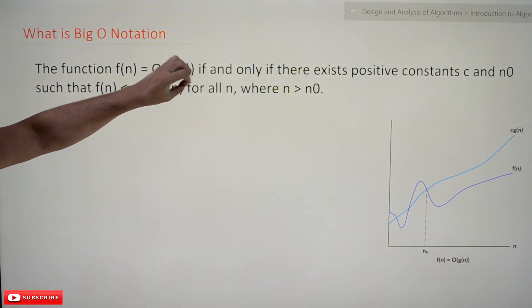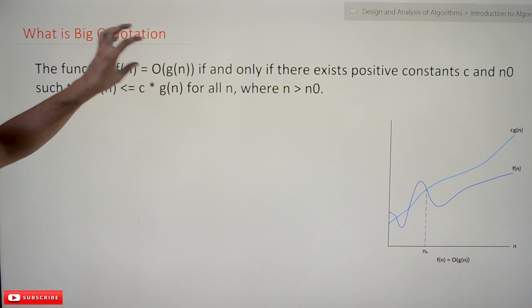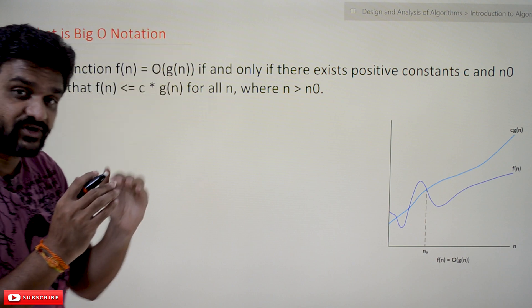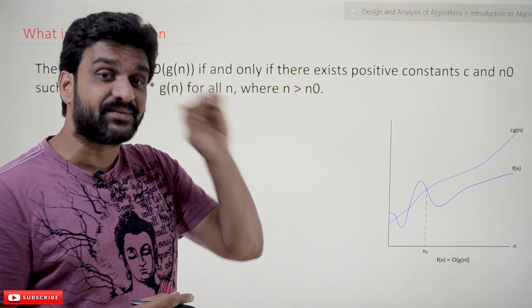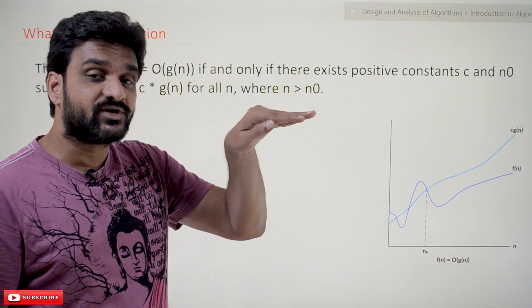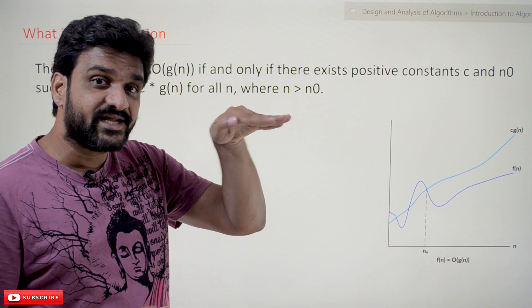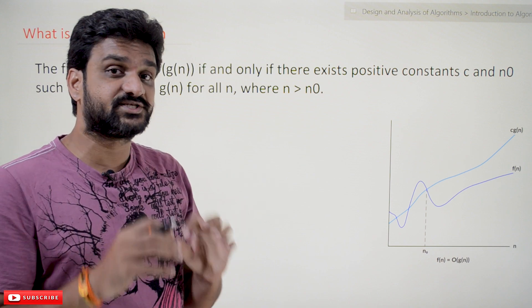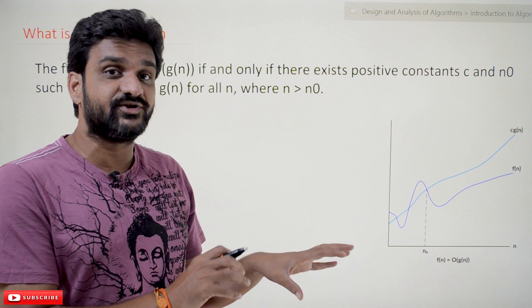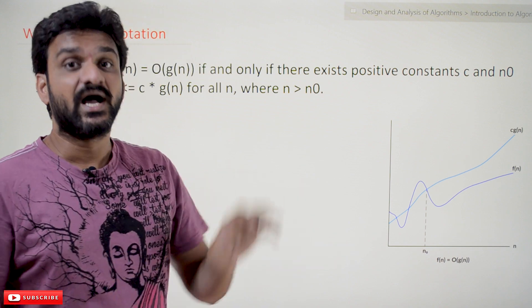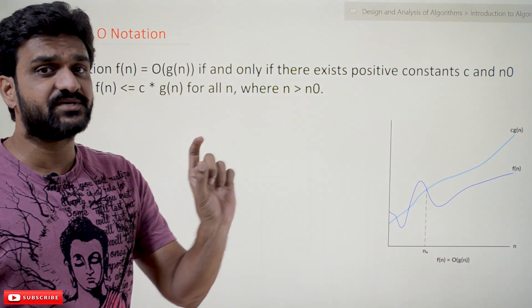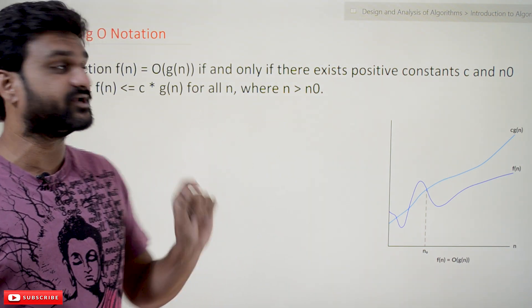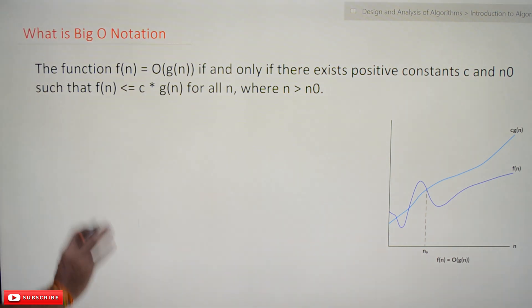Now coming to this class, we'll try to understand what is Big O notation. Math is involved in this definition, so we will try to understand every concept step by step in a sequential way. Our suggestion is to watch this video as many times as possible until you get clarity, because it is a bit complex and mathematical concepts are involved.